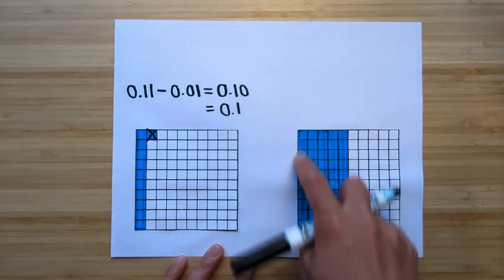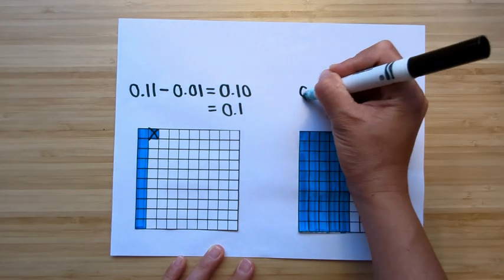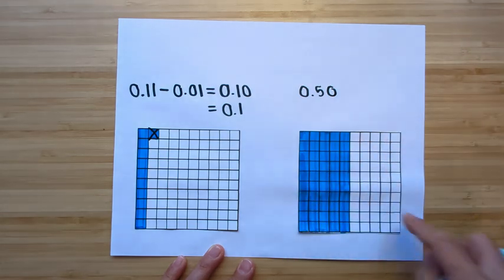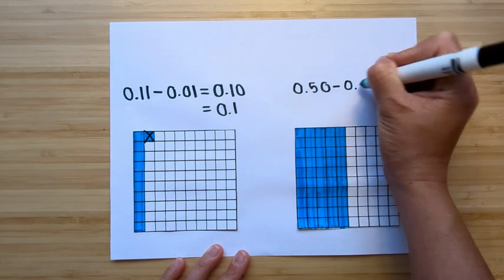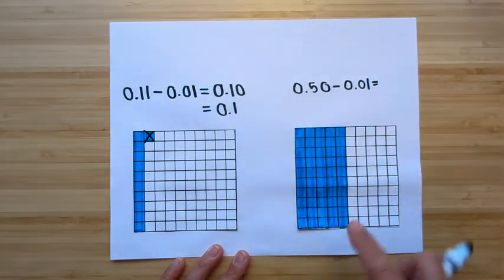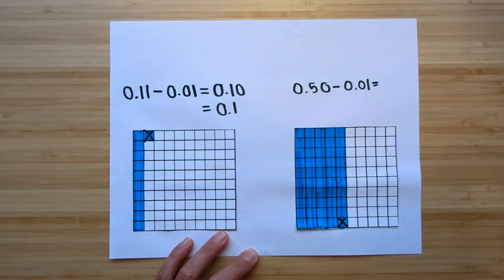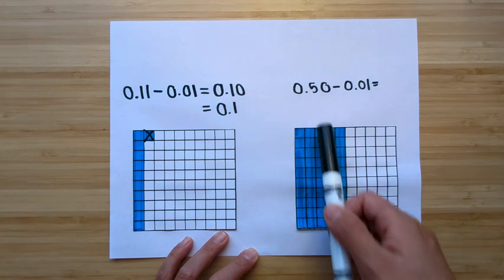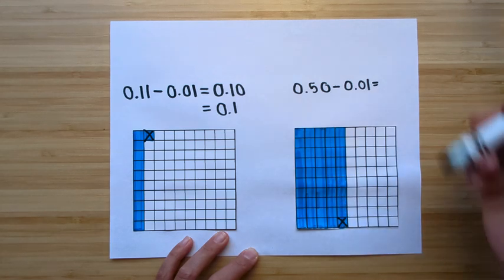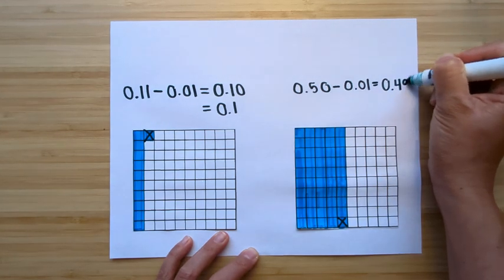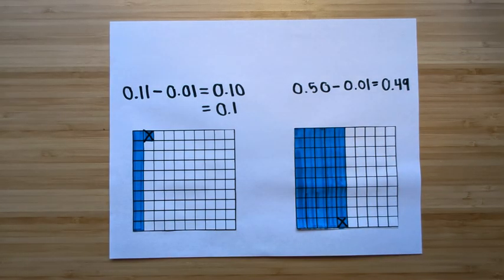Let's look at this last one. We have five-tenths, or fifty-hundredths — I'll stay with hundredths since we're on a hundredths grid. We have fifty-hundredths represented. Let's say I take away one-hundredth. Fifty-hundredths minus one-hundredth: looking at one small box crossed out, I can count four full columns — forty — then forty-one through forty-nine. So one-hundredth taken away from fifty-hundredths leaves forty-nine-hundredths.